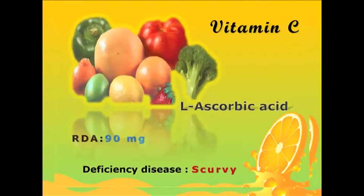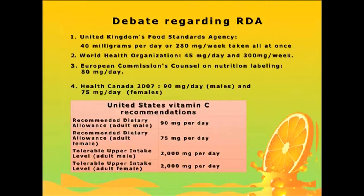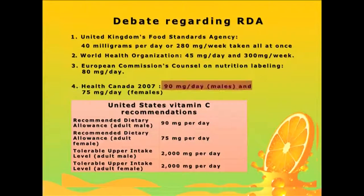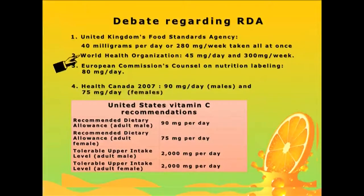The deficiency disease associated with vitamin C is scurvy. The recommended dietary allowance is about 45 to 90 mg per day, and there is some debate about this. The United States recommends 90 mg per day for adult males and 75 mg per day for adult females, with a tolerable upper limit of 2000 mg per day. The UK's Food Standard Agency recommends 40 mg per day for both adult males and females, or 280 mg per week taken all at once. The European Commission's recommendation is 80 mg per day for both adult males and females.